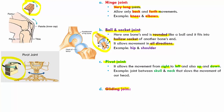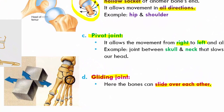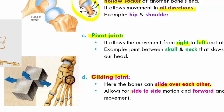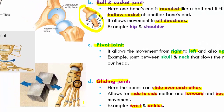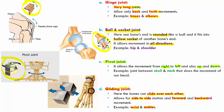Last, we have the gliding joint. A gliding joint is when one bone can slide over another bone, allowing side to side movement and forward backward movement. An example is your wrist and your ankle — try moving your wrist up and down and sideways, same with your ankle. You are able to move it because of the gliding joint. So the four joints are hinge joint, ball and socket joint, pivot joint, and gliding joint.